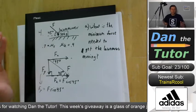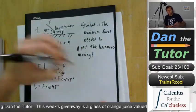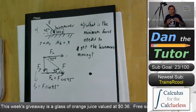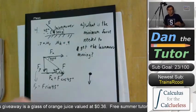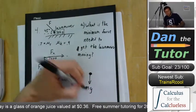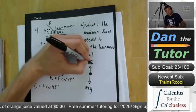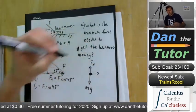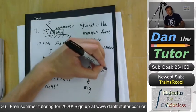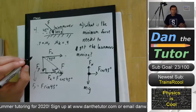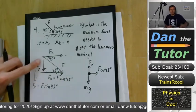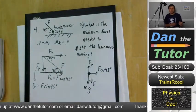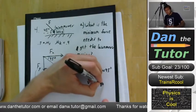Now we can draw our free body diagram. We have Mg pointing down, normal force Fn pointing up, Fx pointing to the right as F cosine 45°, and then Fy also pointing downward as F sine 45°, because we're pushing down at an angle.